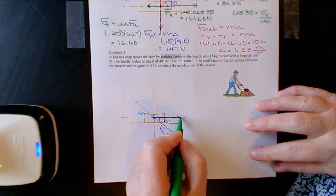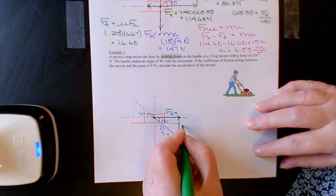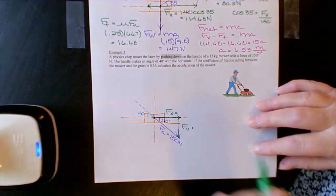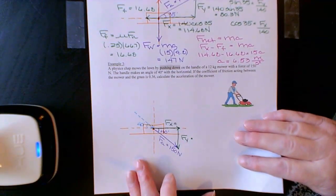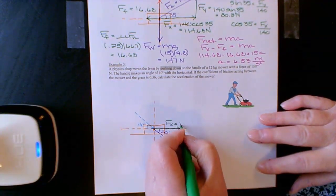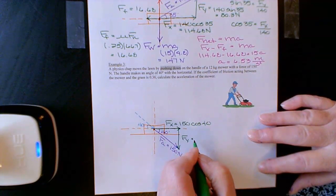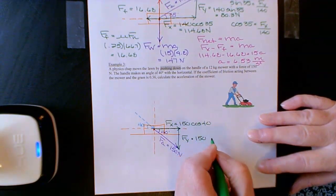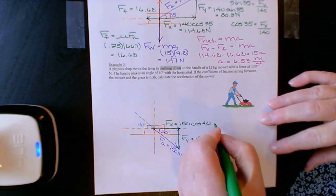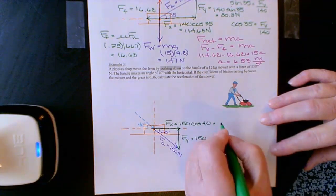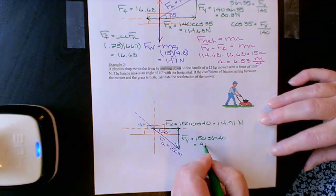Part of his pushing down will propel the lawn mower in the x direction, and part creates a downward force pushing it into the ground. The x component is the hypotenuse times cosine 40, giving 114.91 newtons. The y component is the hypotenuse times sine 40, giving 96.42 newtons.